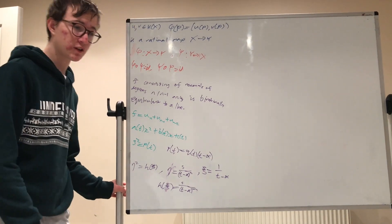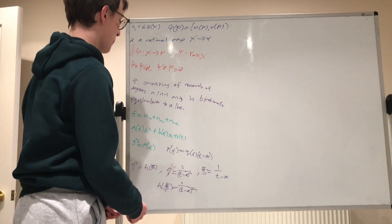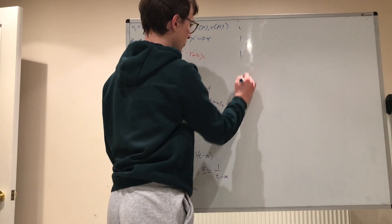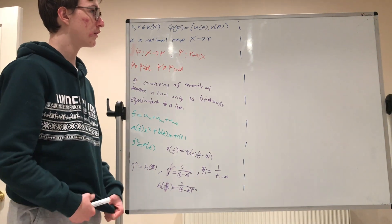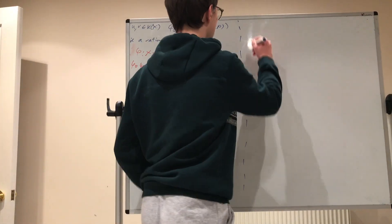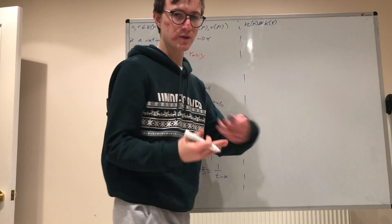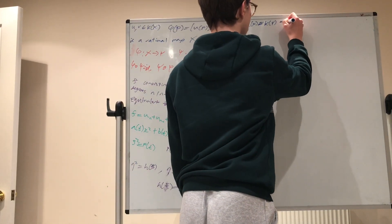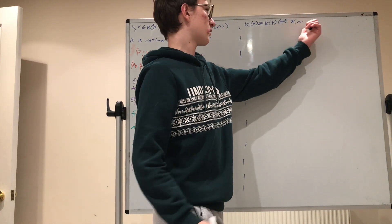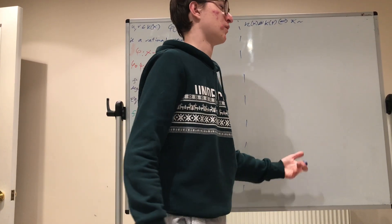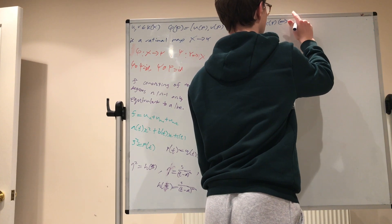So we're actually surprisingly close already to the end of the video. Just one last fact that I want to mention, just because again it's important, and it's actually something that you would expect. k of x is isomorphic to k of y, so these two rational function fields are isomorphic if and only if x is birationally equivalent to y.